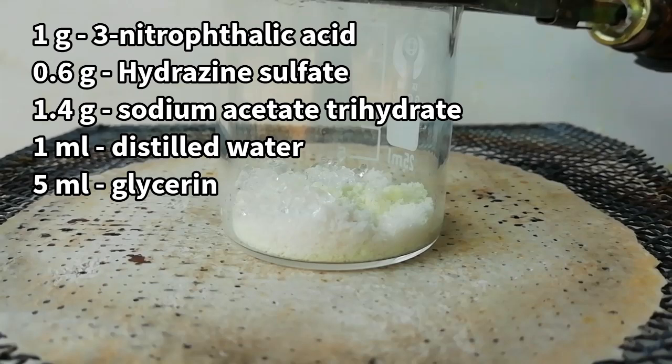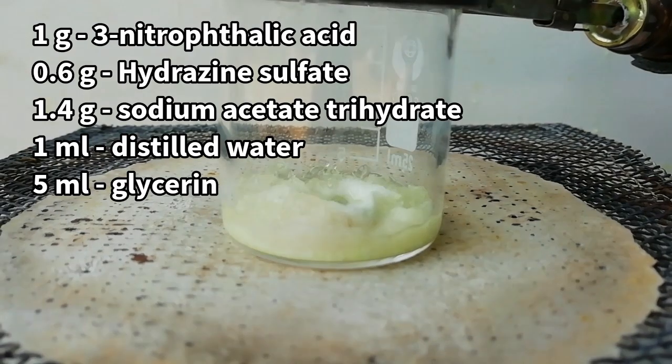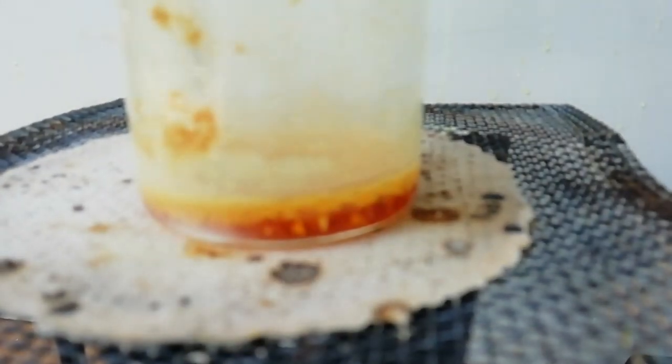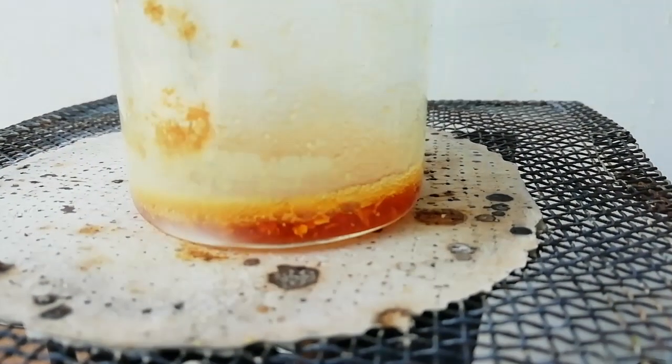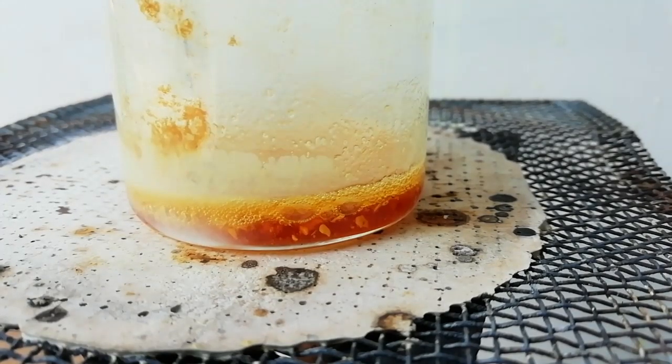First, 1 gram of 3-nitrophthalic acid, 0.6 grams of hydrazine sulfate, and 1.4 grams of sodium acetate trihydrate were added to a beaker. Then 1 ml of distilled water and 5 ml of glycerin were added.